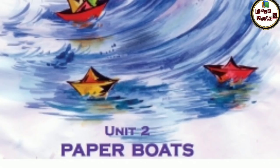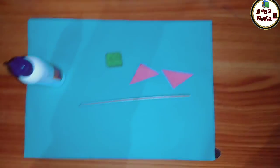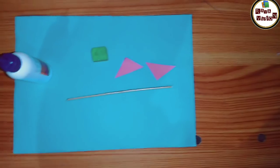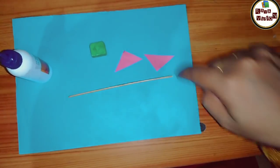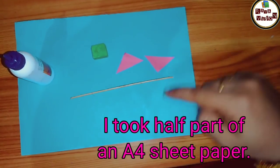Hello my dears, welcome back to today's class. Let's start unit number two: paper boats. Let us also make a paper boat. All you need is a rectangular sheet of paper, two small triangular pieces of any other colored paper, a small stick, one eraser piece, and glue.